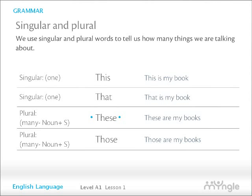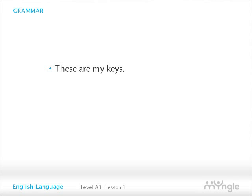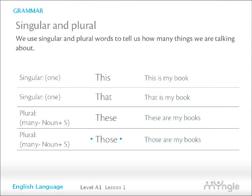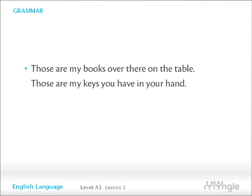We use 'these' as a plural of 'this', for something which is near to us. For example: these are my books. These are my keys. We use 'those' as a plural of 'that', for something which is farther away. For example: those are my books. Those are my books over there on the table. Those are my keys you have in your hand.